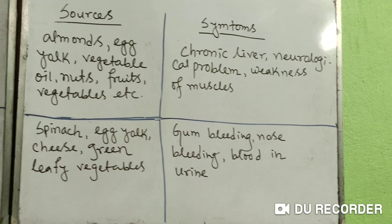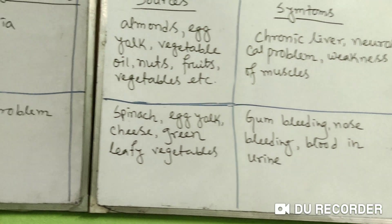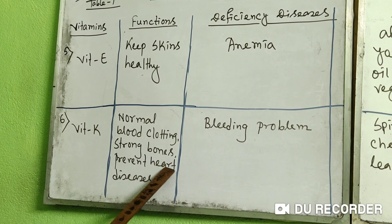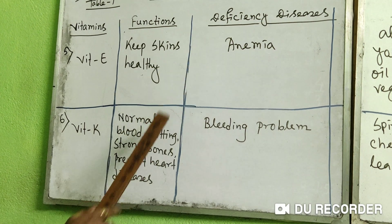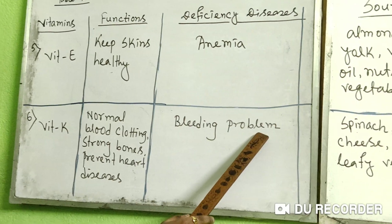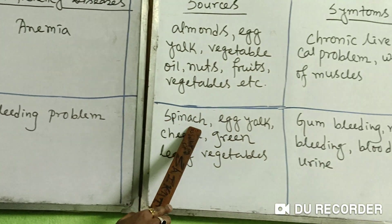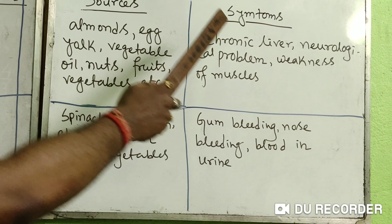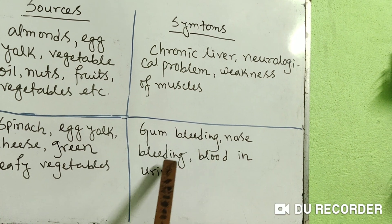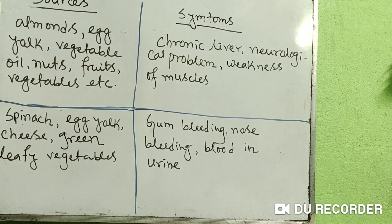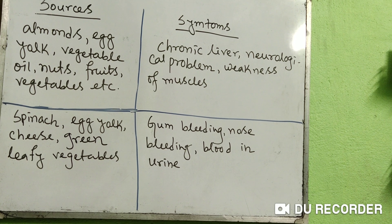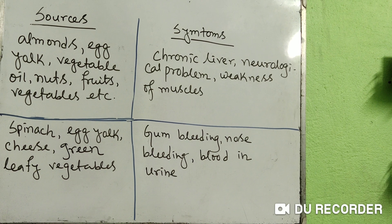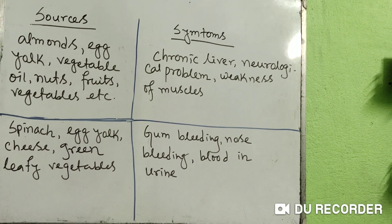The next vitamin is Vitamin K. Its functions are normal blood clotting, strong bones, and prevention of heart diseases. The deficiency disease is a bleeding problem. Sources include spinach, cheese, and green leafy vegetables. Symptoms are gum bleeding, nose bleeding, and blood in urine. These are all the vitamins with their functions, deficiency diseases, sources, and symptoms.